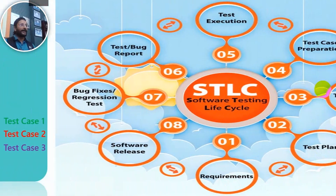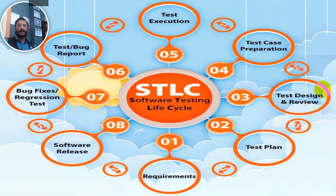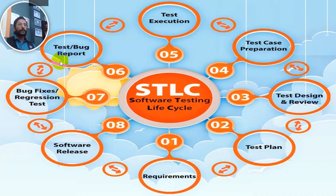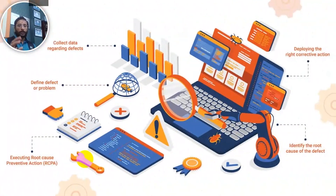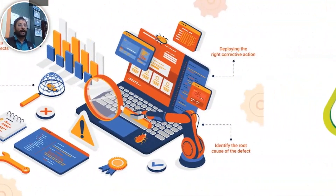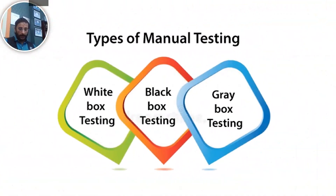You can do manual and automation testing. There is a life cycle of testing — the software testing life cycle. The software has been tested to be removed from defects and root causes. Manual testing is where there are two types of testing, and there are three types of manual automation.